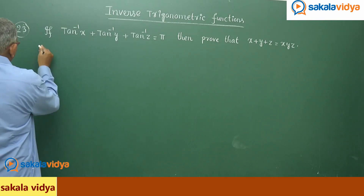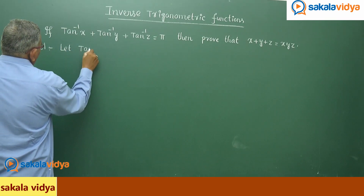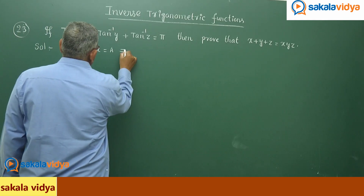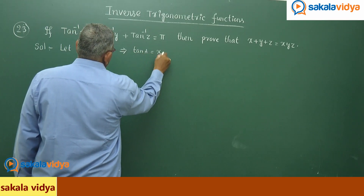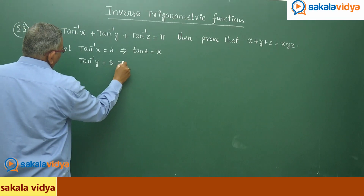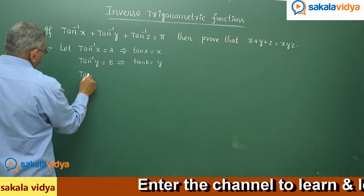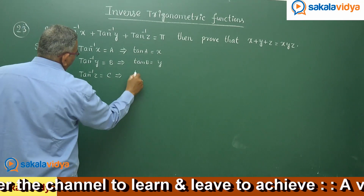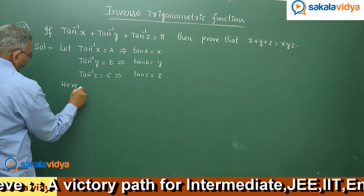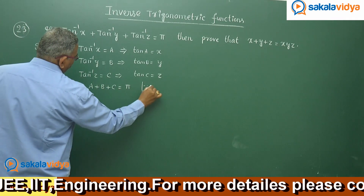Let us solve it. Let tan⁻¹x = a, so tan a = x; tan⁻¹y = b, so tan b = y; tan⁻¹z = c, so tan c = z. That means a + b + c = π, i.e., 180 degrees.